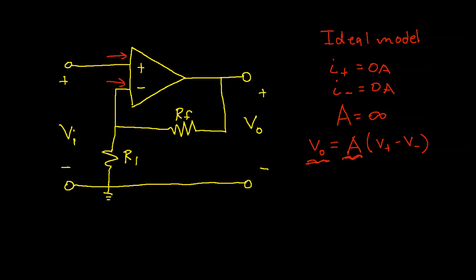Since this is essentially infinite, in order for V0 to be some reasonable number, the difference between these two input terminal voltages has to be very small. The assumption that we will make is that the output will generate whatever voltage is necessary to make the difference between the input voltage for the non-inverting input and the input voltage for the inverting input essentially zero.